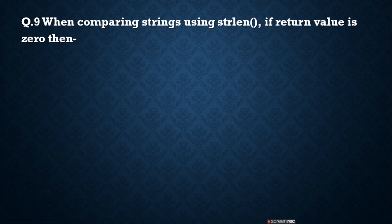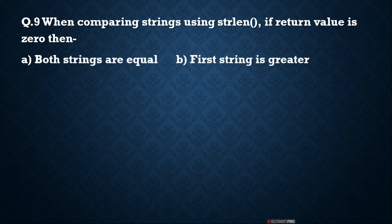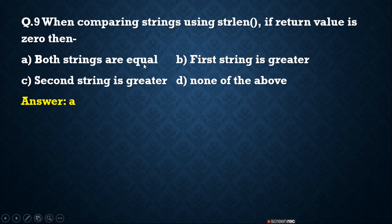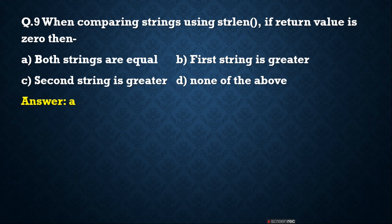When comparing strings using strcmp, if the return value is 0, what does it mean? Options: both strings are equal, first string is greater, second string is greater, or none. The correct answer is A — both strings are equal. For example, if both strings are 'apple', ASCII value of 'a' minus 'a' equals 97 minus 97 equals 0. So when the answer is 0, both strings are equal.